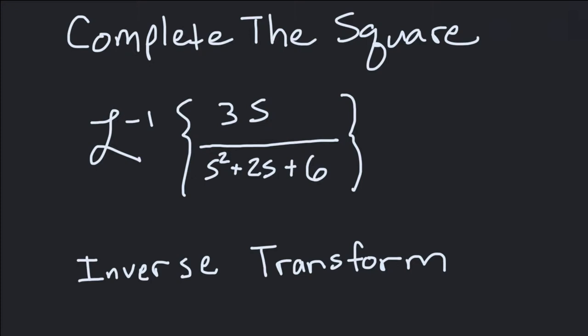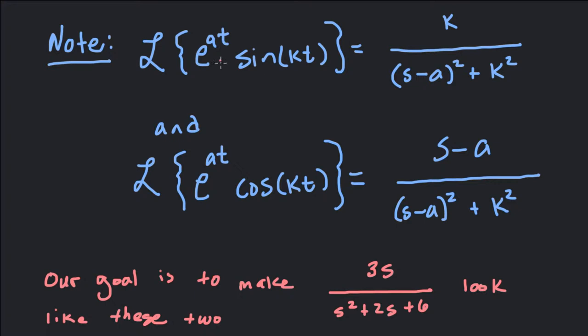If we look at the first translation theorem, it would say that the Laplace transform of e to the at sine of kt would be equal to k over (s minus a) squared plus k squared. So everywhere we see an s, we replace it with s minus a. And the Laplace transform of e to the at cosine kt is going to look like (s minus a) over (s minus a) squared plus k squared.